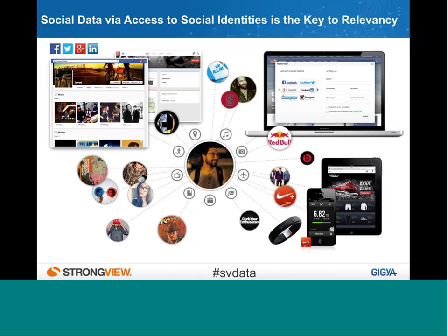Traditionally, marketers have relied on third-party data brokers, which is often inaccurate, or registration data, which gives us somewhat limited information about consumers. That's really because that's all we had access to as marketers before the last couple of years. But now, thanks to the ubiquity of social networks, we have two billion consumers who have told us a lot about themselves through Facebook, Twitter, LinkedIn, Google, and internationally there are really 30 different social networks.